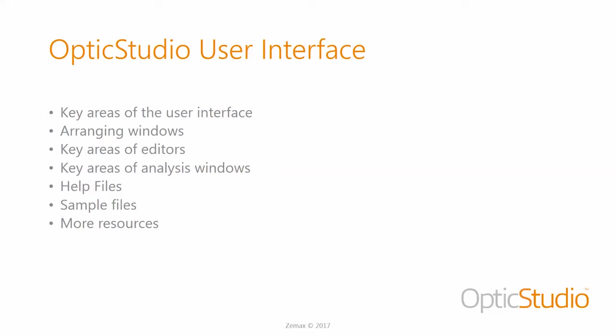We'll start with the key areas of the user interface. Then we'll talk about how you can arrange different windows. Then we'll talk about two different types of windows: editors and analysis windows. We'll show you where the help files are and how to open them. The trial version also comes with a lot of sample files, so we'll show you how to open those as well as where you can find more resources.